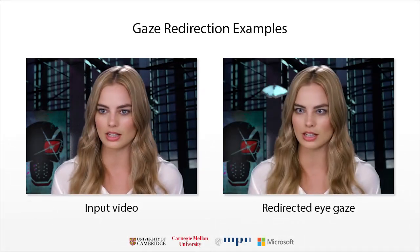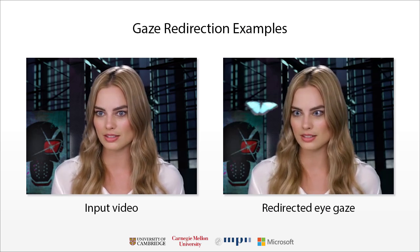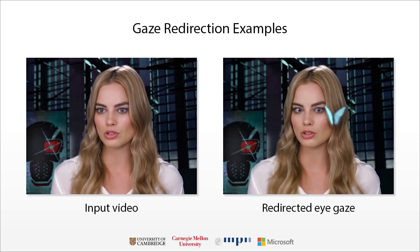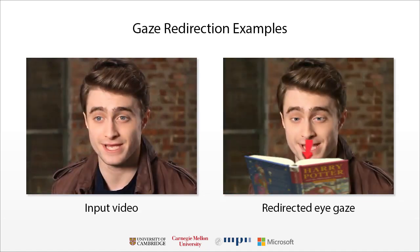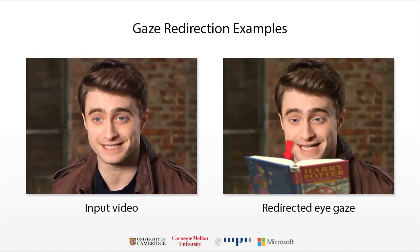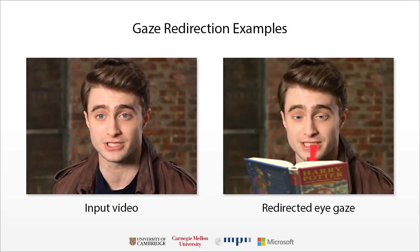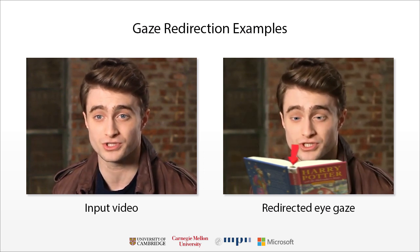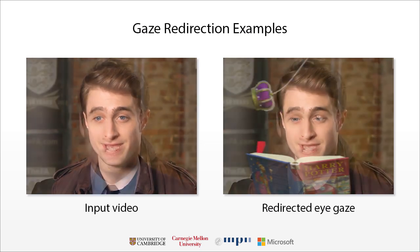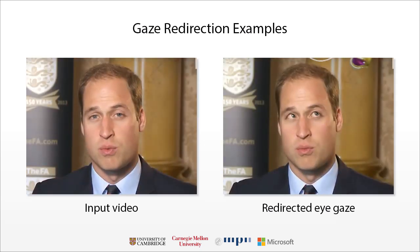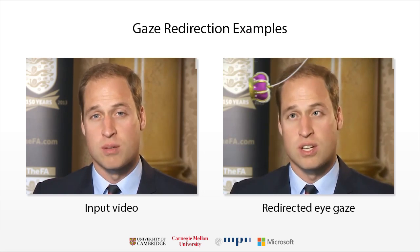Here are some additional examples that show GazeDirector working on eyes with a range of different appearances. In this sequence, we have modified visual behaviour, making the actor appear to be reading a book. In this sequence, we make a person look at new 3D gaze targets that we introduce in a video.